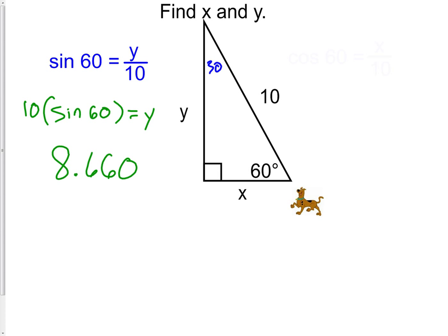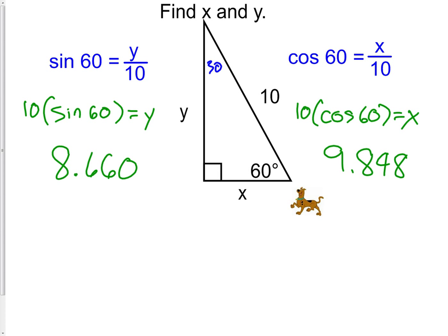Now we need to move on to the value of x. The value of x, we can do something very similar. This time though, I am going to use the cosine of 60. Because from that angle 60, the adjacent side is x, and the hypotenuse is 10. Once again, we will cross multiply. And we get cosine of 60 times 10, which is 9.848.